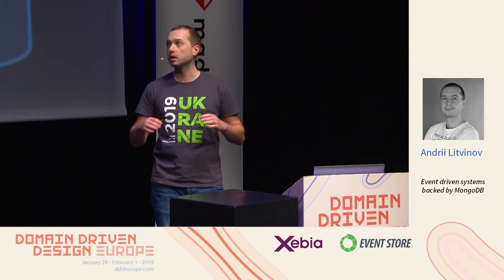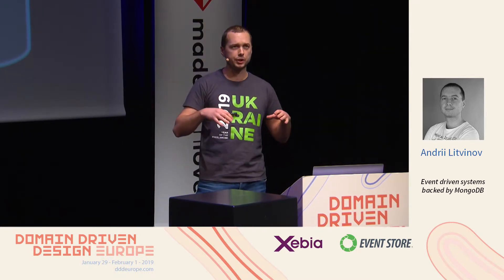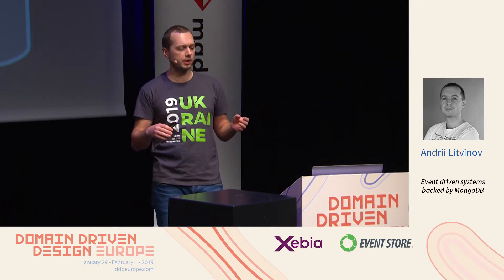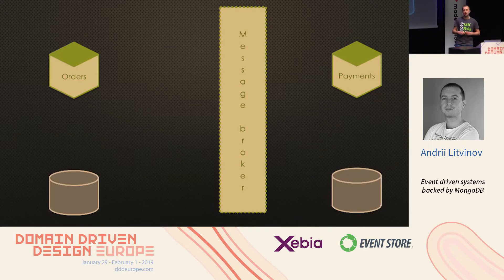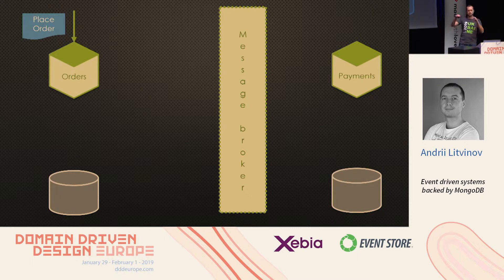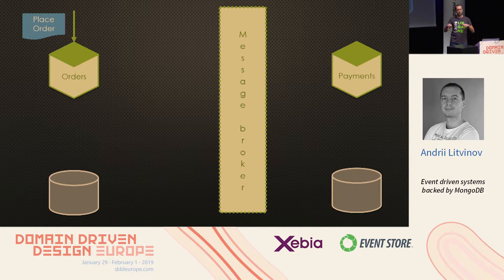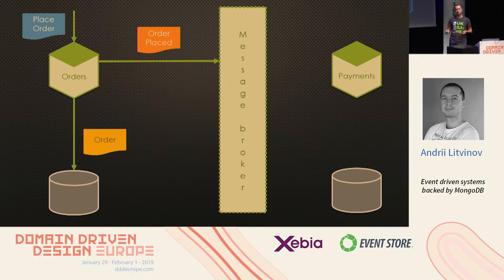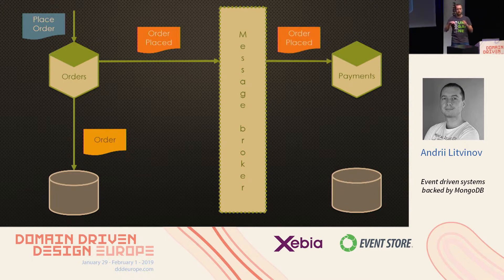Let's imagine a quite simple distributed system with two services. One is orders and another one is payments. When a place-order command is sent to our service via the API, we process some logic, we persist the state to a database, and we publish the event to a message broker, so that other services — in this case payments or any other service in the system — can react on the event and finalize or complete the transaction with the payment.